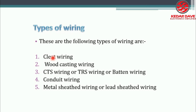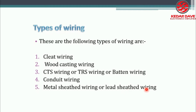The first type is cleat wiring, the second is wood casing wiring, the third is CTS wiring, TRS wiring and batten wiring. The fourth one is conduit wiring and the fifth is metal sheathed wiring or lead sheathed wiring.